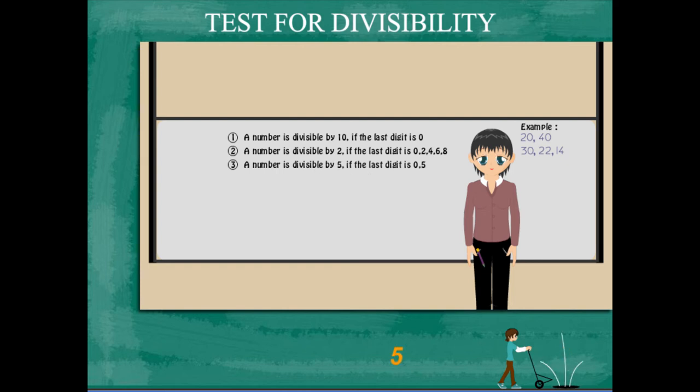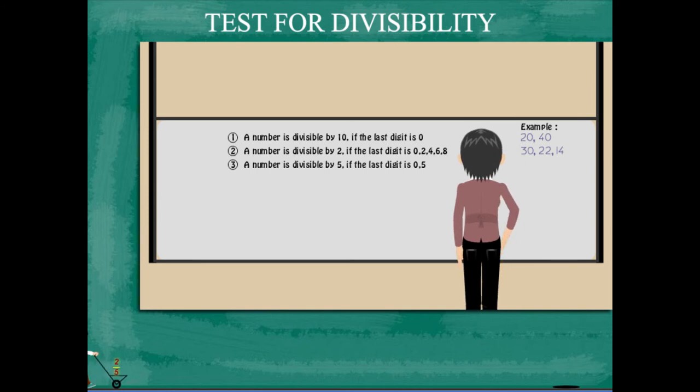A number is divisible by 5 if its last digit is either 0 or 5.